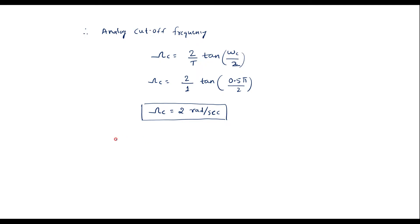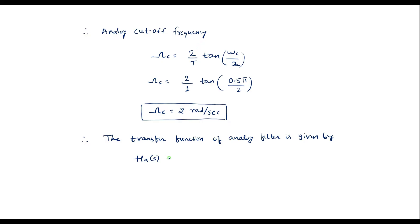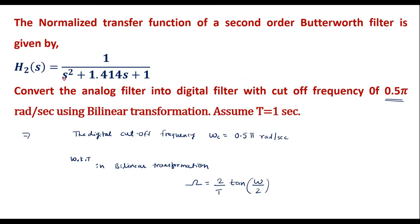Now let me write the transfer function of the analog filter. The transfer function of the analog filter Ha(s) is obtained from the normalized transfer function H₂(s), provided that s is replaced by s/ωc. So s should be replaced by s/2 in H₂(s) to get Ha(s).